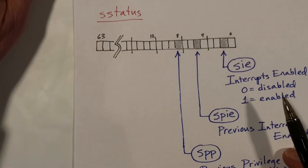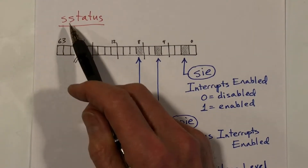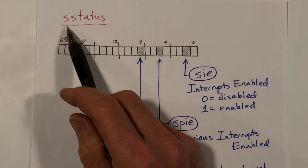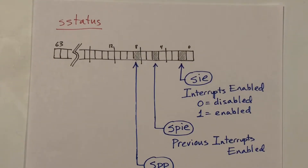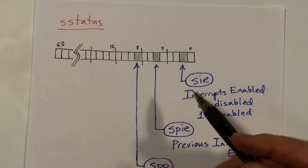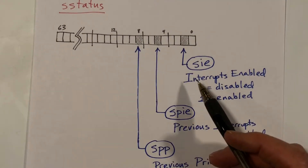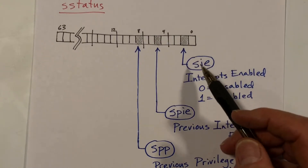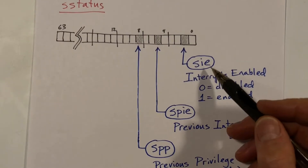Let's focus on the status word that code running in supervisor mode would see — the S status word. The XV6 kernel runs almost entirely in supervisor mode, so this is the status word we're concerned with. I'm going to focus on three bits, and I think that's all you need to understand the XV6 kernel.